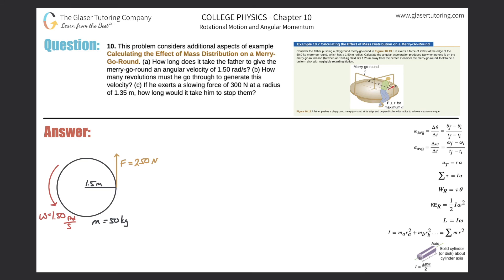Number 10. This problem considers additional aspects of example calculating the effect of mass distribution on a merry-go-round. Letter A. How long does it take the father to give the merry-go-round an angular velocity of 1.5 radians per second? So here's the picture.